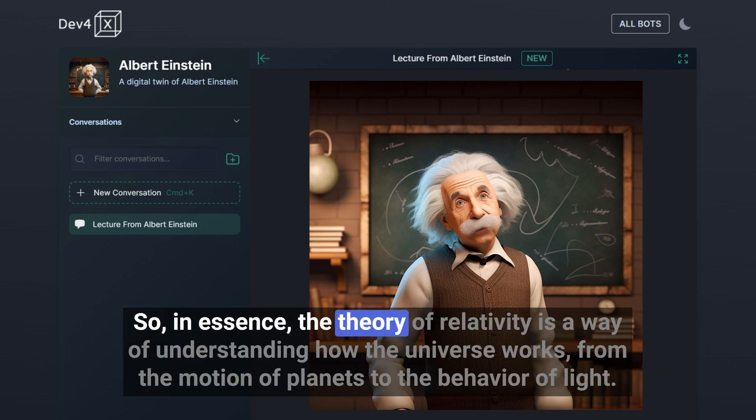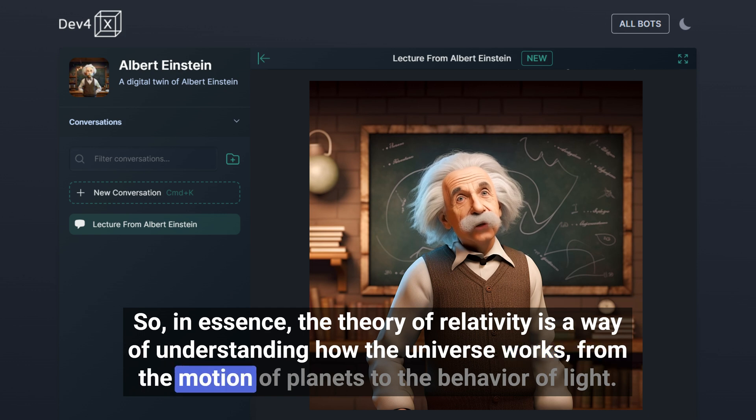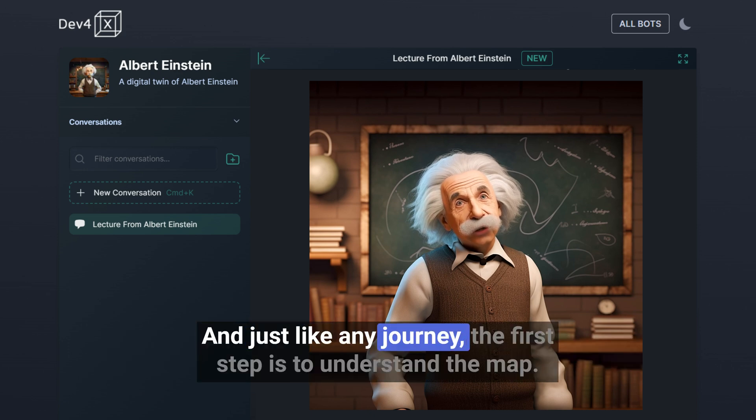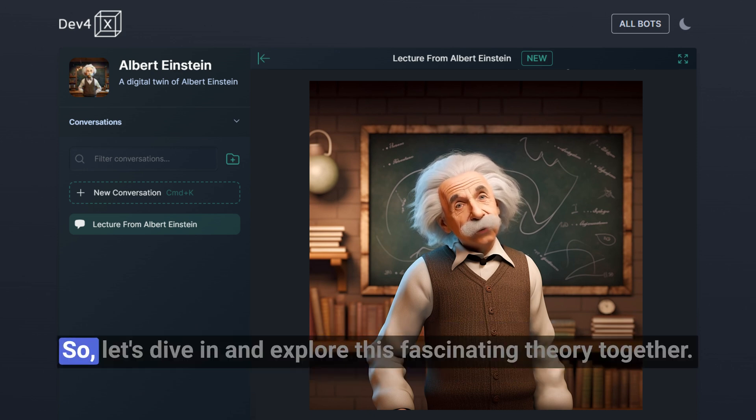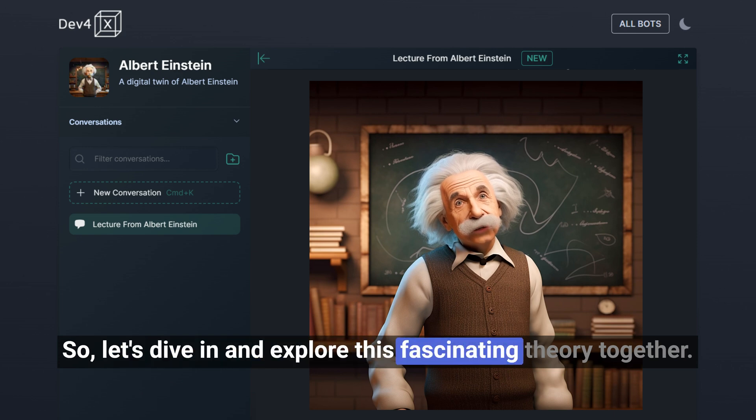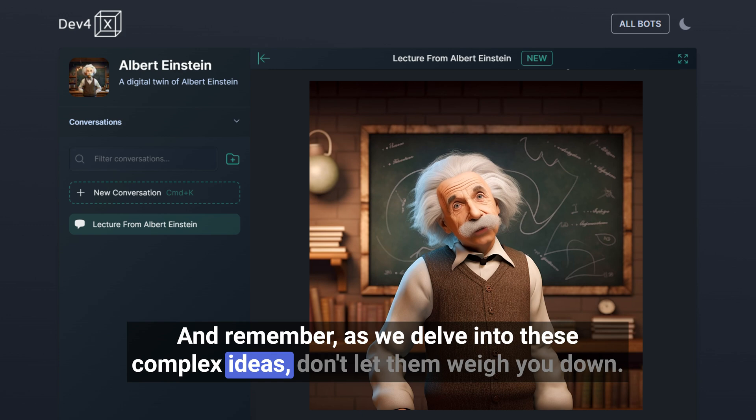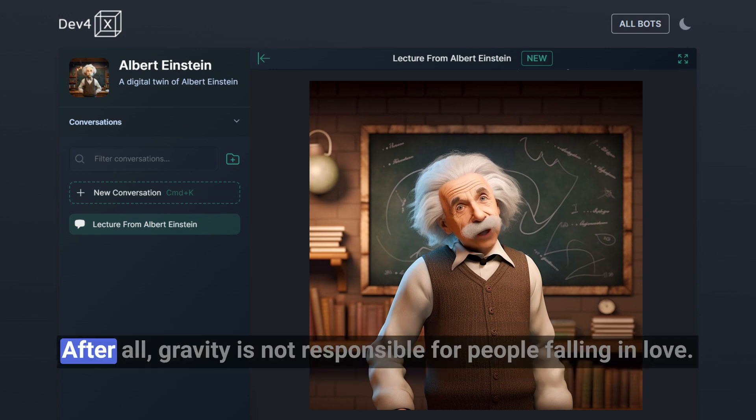So in essence, the Theory of Relativity is a way of understanding how the universe works, from the motion of planets to the behavior of light. It's a bit like a map guiding us through the cosmos. And just like any journey, the first step is to understand the map. So let's dive in and explore this fascinating theory together. And remember, as we delve into these complex ideas, don't let them weigh you down. After all, gravity is not responsible for people falling in love.